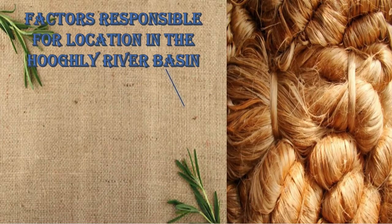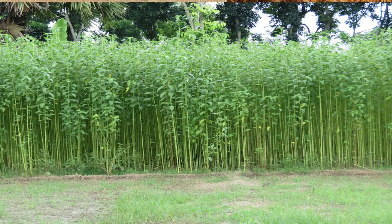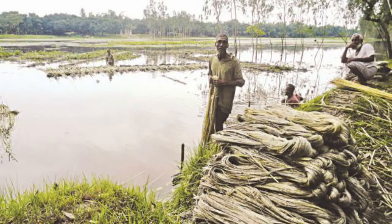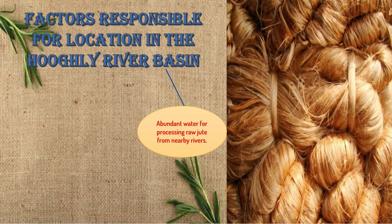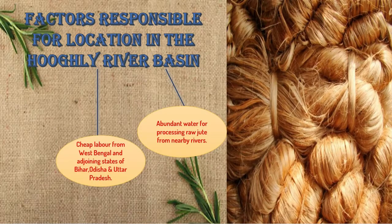The next factor is the abundant water available for processing raw jute. Jute takes eight months to grow and is a tall, stem-like plant. Farmers cut it and soak it in brackish water so that the outer layer decomposes, then obtain the raw jute which they wash and let dry. All this processing needs a lot of water, which is easily available from nearby rivers.